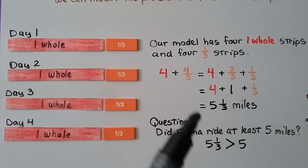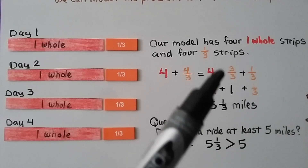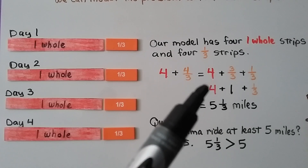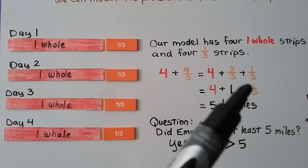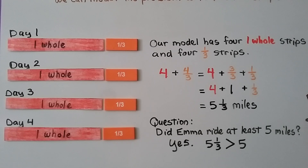Our model has 4 whole strips and 4 one-third strips, giving us 4 wholes plus 4/3. That's equal to 4 plus 3/3 plus 1/3. Since 3/3 equals 1, we have 4 + 1 + 1/3, which is 5 and 1/3 miles. The question was: did Emma ride at least 5 miles? The answer is yes, because 5 and 1/3 is greater than 5. She actually rode more than 5 miles.